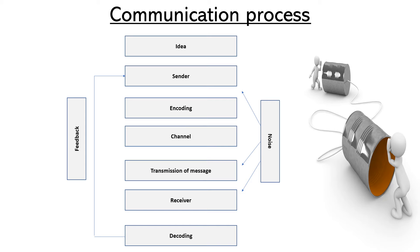It is a two-way process, basically. While the sender is sending a message through the transmission channel, there can be a lot of disruption — a lot of noises. Noises can include even physical barriers — any kind of disruption that can happen during communication. Some people can come in between and break the conversation, break the communication. So all these things come under noise.